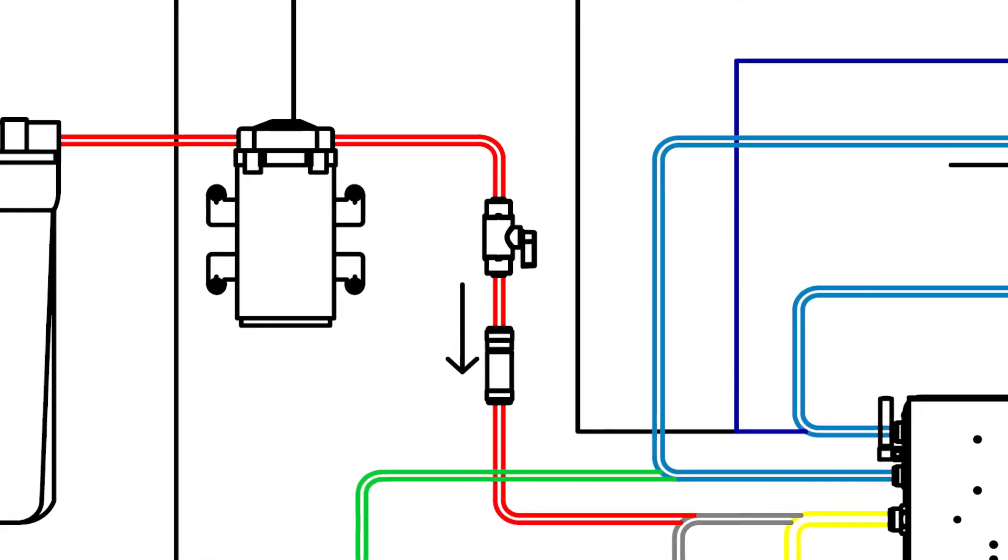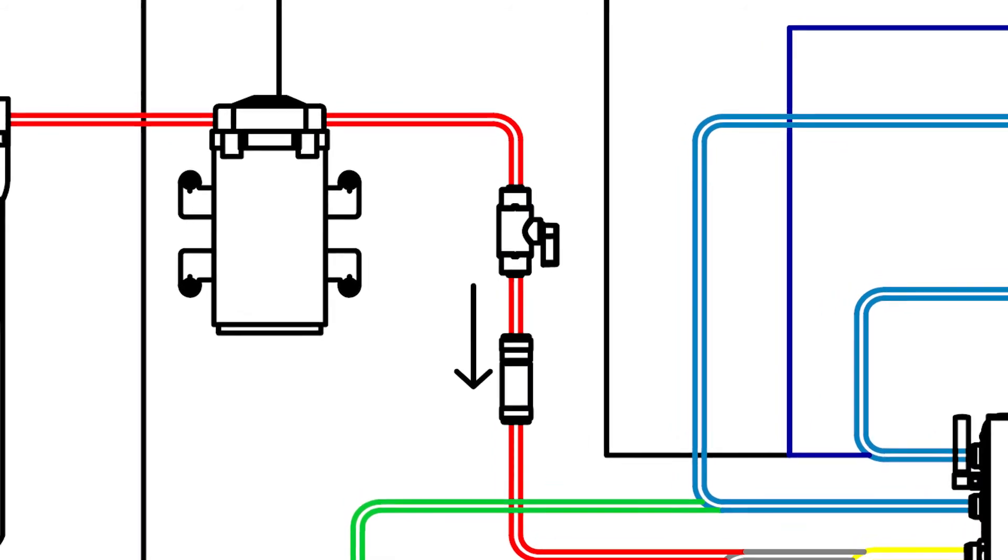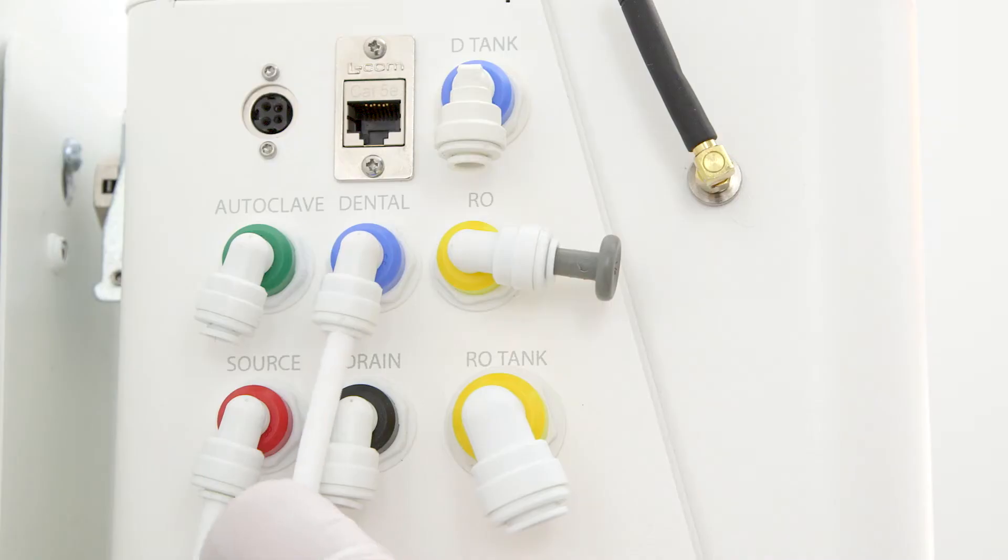Then run tubing from the out port on the booster pump to the source in port on the system. Once this connection is in place, make a cut and install an inline ball valve after the booster pump.